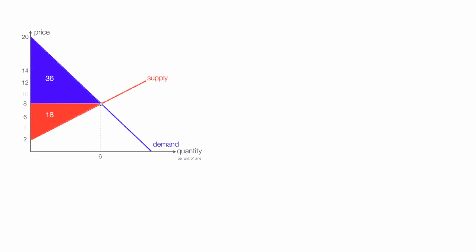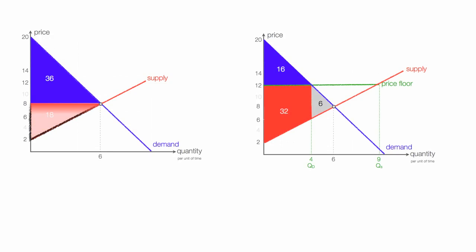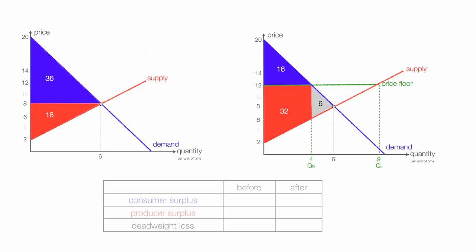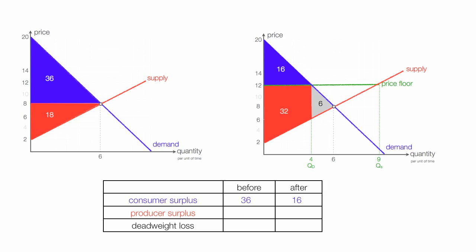It's important to compare before and after a price floor. Consumer surplus before is 36, and it's 16 after — so there's a loss to consumers. Producer surplus is 18 before and 32 after — so producers gain. There's no deadweight loss before the price floor, and the deadweight loss after is 6, so there's a loss to society. Clearly, producers gain from a price floor.